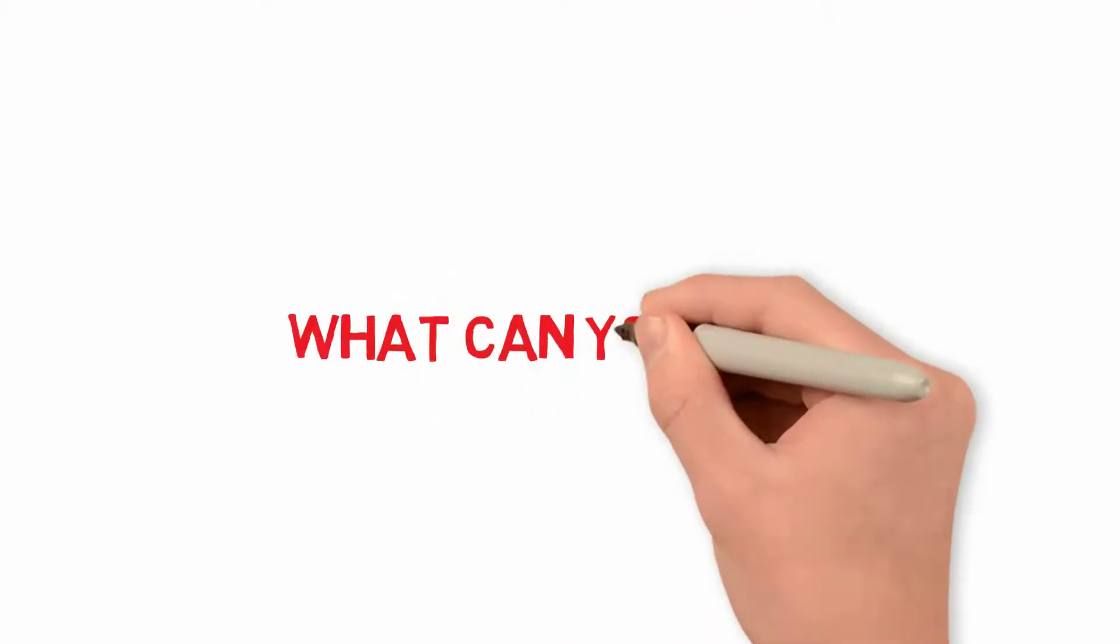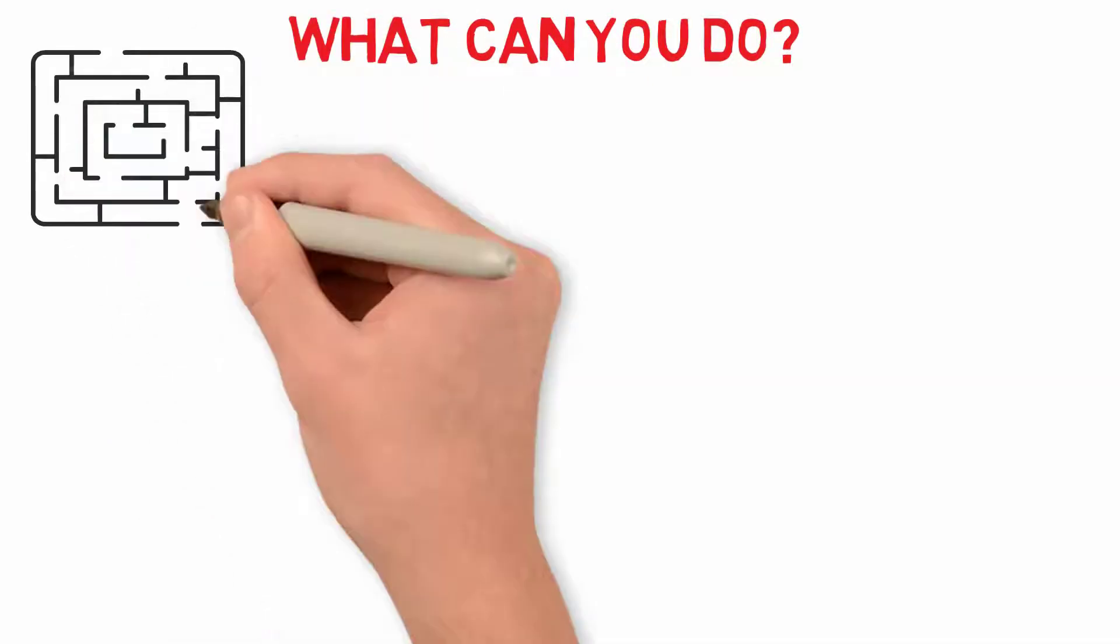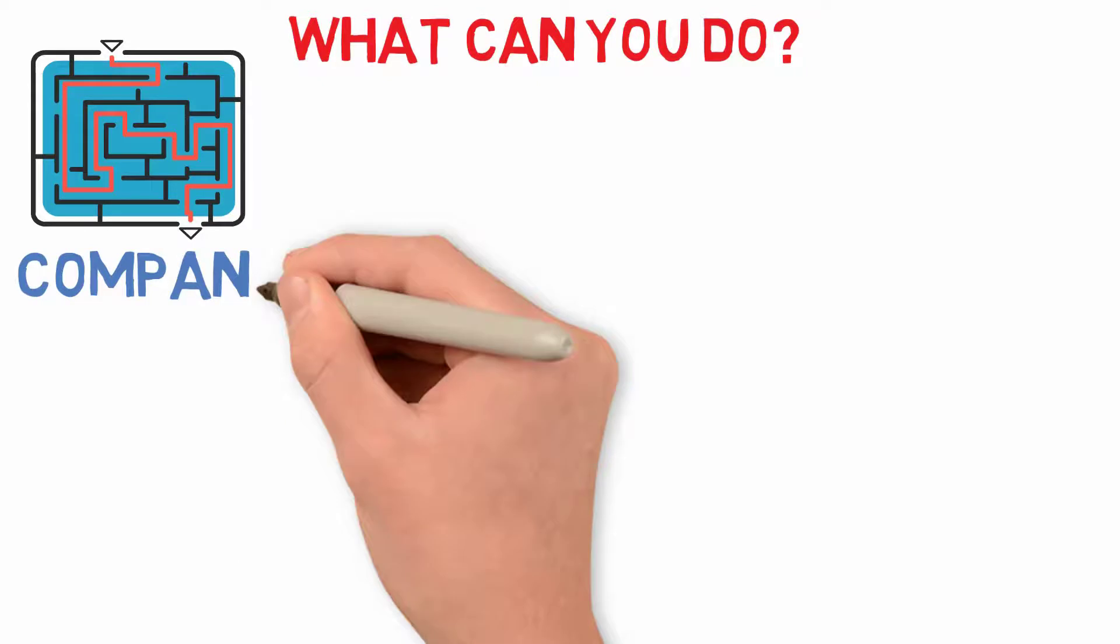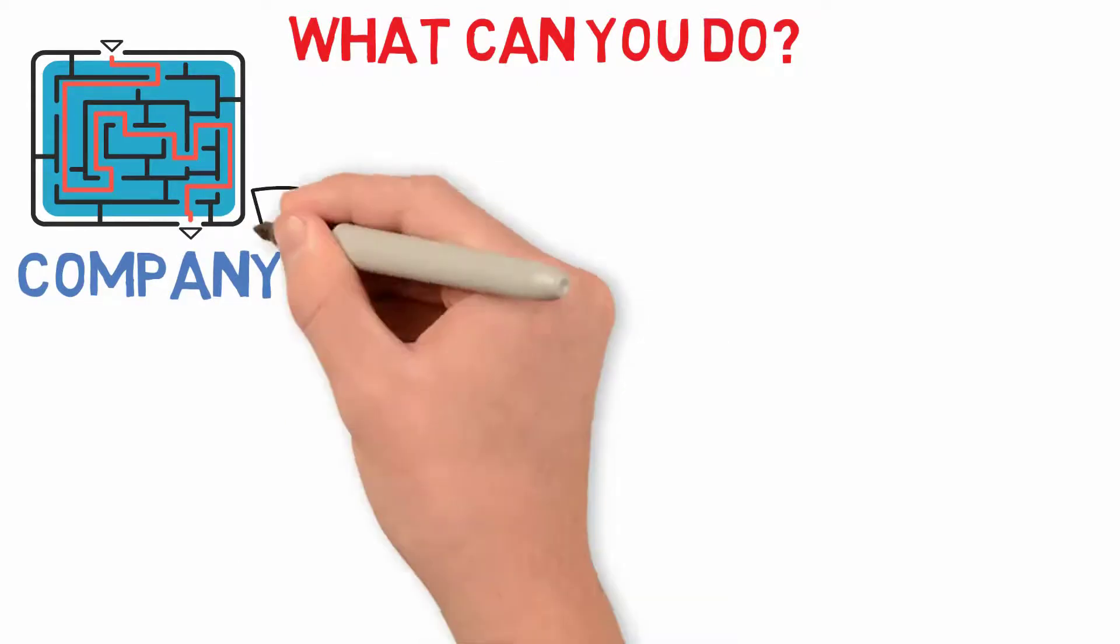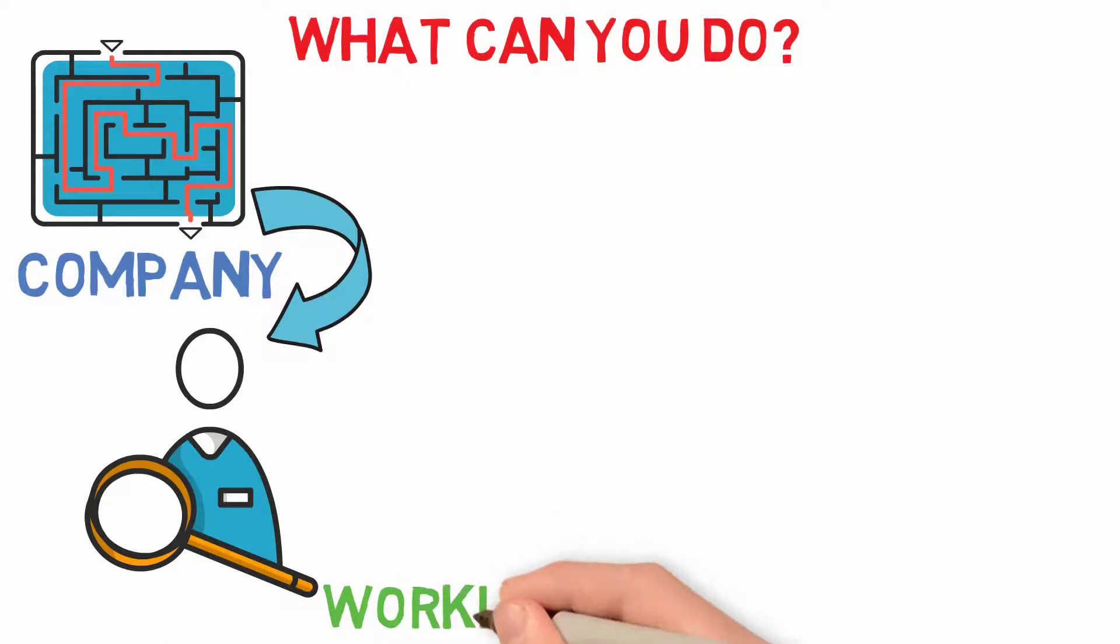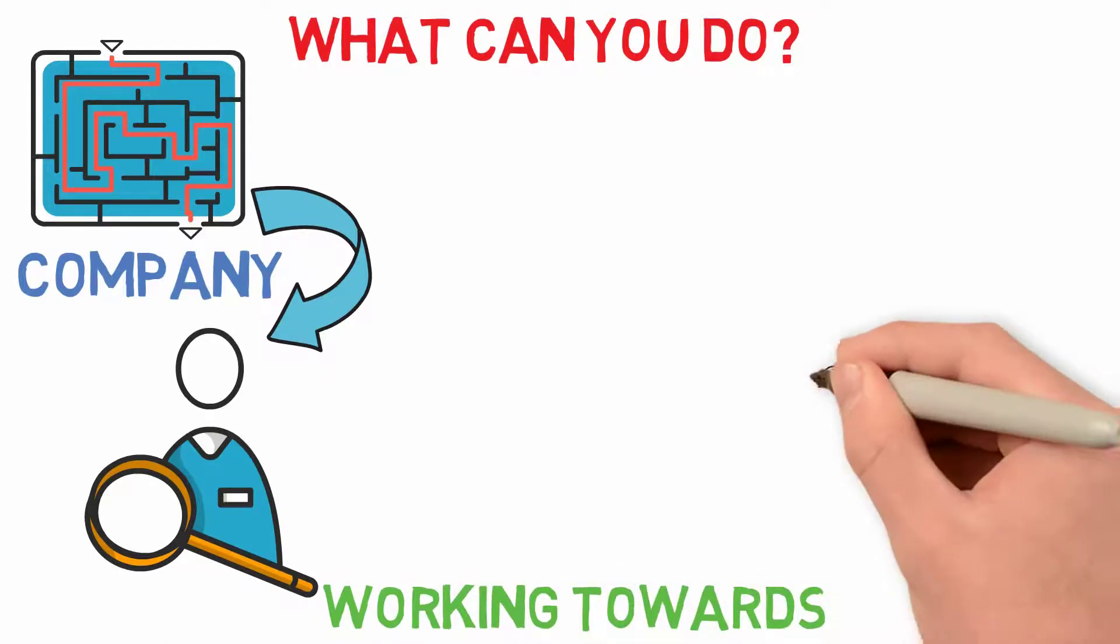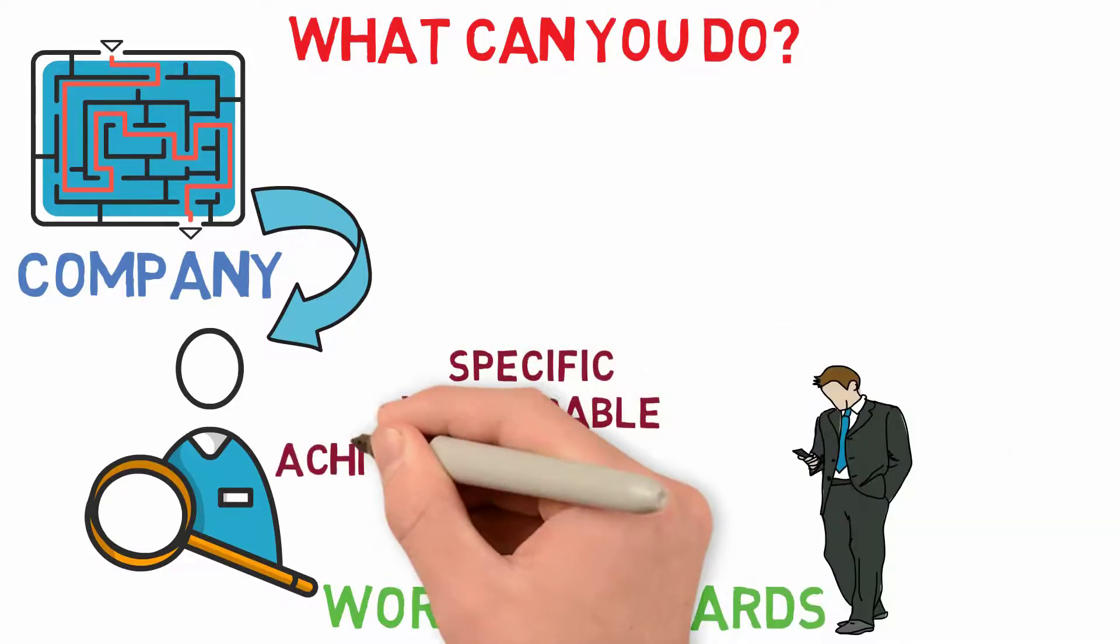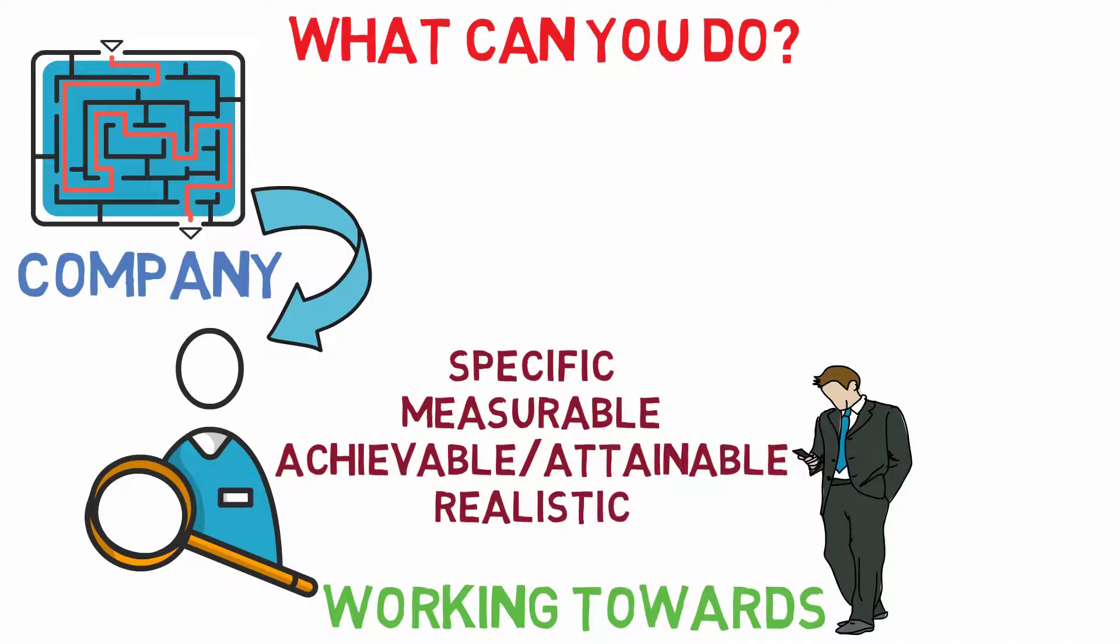What can you do? Define objectives that support your unified purpose. Once you have set up a unified purpose for your company, it's time to define specific objectives for each objective so employees know what they should be working towards. Objectives should be SMART, which stands for Specific, Measurable, Achievable, Attainable, and Realistic.